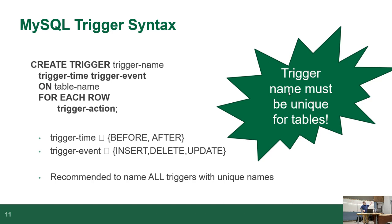The syntax is: CREATE TRIGGER with a name, then you give it the time (BEFORE or AFTER) and the event (INSERT, UPDATE, or DELETE) ON table FOR EACH ROW, then the trigger actions. The trigger name is usually unique for the table, but as a rule of thumb make your trigger names unique throughout the entire database — if you've got five with the same name and you're tracking down a misbehaving trigger, it gets challenging to find where the bug is.